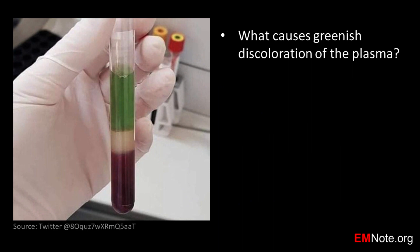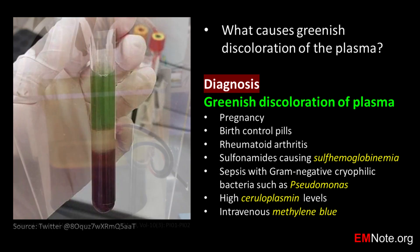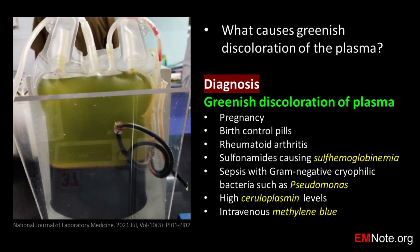What causes the greenish discoloration of the plasma? Greenish discoloration of plasma can be caused by pregnancy, birth control pills, rheumatoid arthritis, drugs such as sulfonamides which cause sulfhemoglobinemia, sepsis due to Pseudomonas, high ceruloplasmin levels, and intravenous methylene blue.